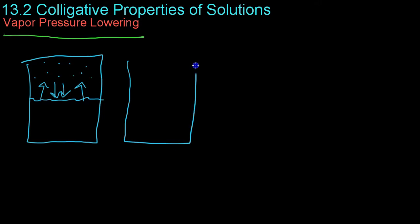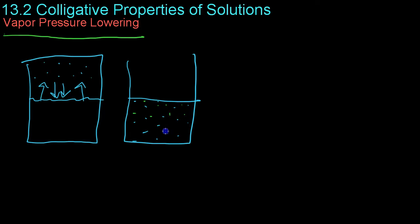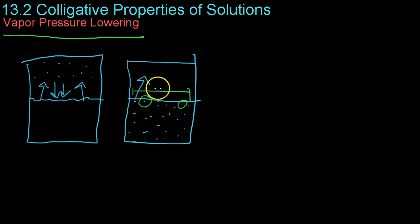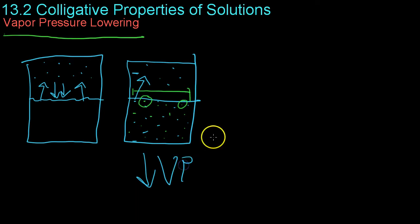If we compare this to a solution where you have the normal number of water molecules but also some sort of solute, you'll notice that at the surface, the water has less surface area than before because some of the molecules at the surface are going to be solute molecules. Naturally, because these solute molecules aren't going to leave the solution and join the gas phase, you're going to have fewer water molecules leaving the solution, which leads to a lower vapor pressure.